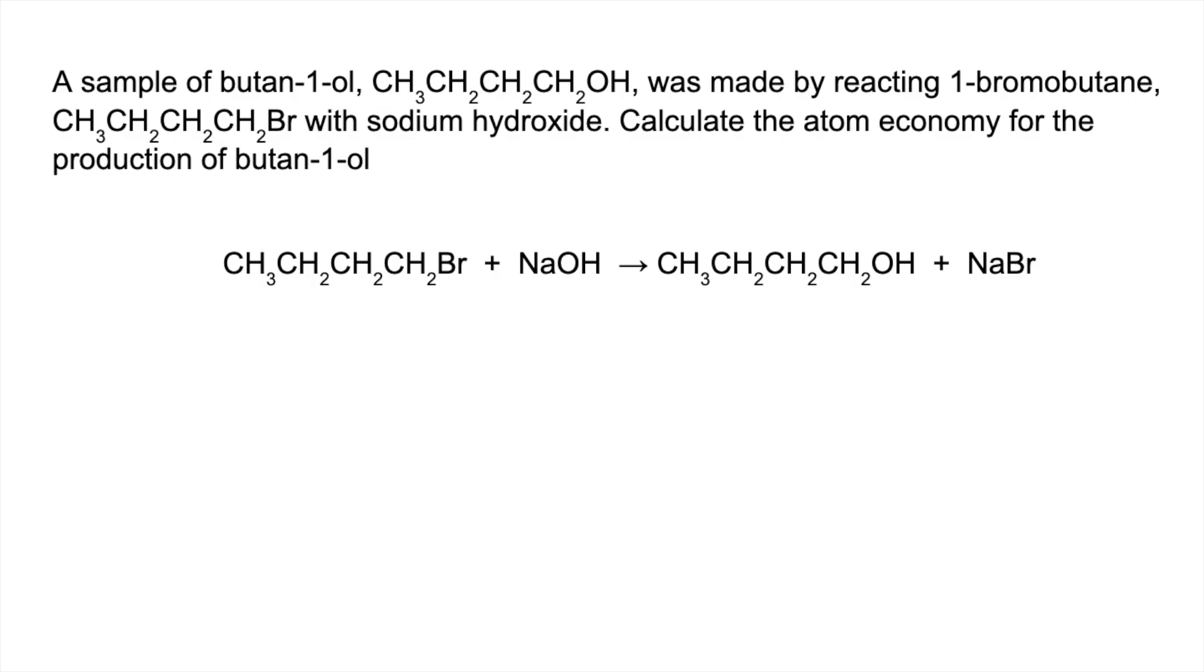So we've got to calculate the atom economy for the production of the alcohol. So if you want to pause the video have a go and play on when you're ready. So obviously the desired product is the butane-1-ol. So basically all we're going to do is work out as a percentage of all of the atoms in the products what percentage have gone into the desired product.